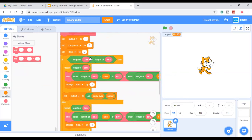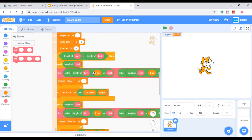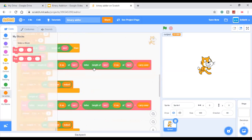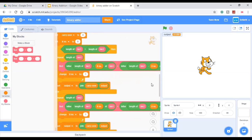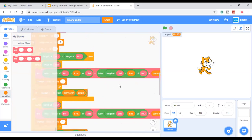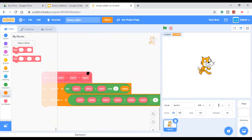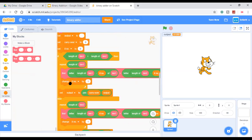And set iteration number to 0. If length of binary 1 is greater than length of binary 2, then repeat length of binary 1. Find letter length of binary 1 minus iteration number of binary 1, plus letter length of binary 2 minus iteration number of binary 2, plus carry over. And note that this is this find block over here. Change iteration number by 1.